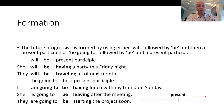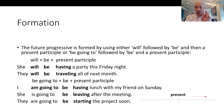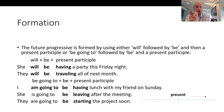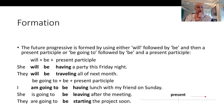A formação. O futuro progressivo você forma com will, e depois be, e depois um present participle, ou be going to, e depois be.